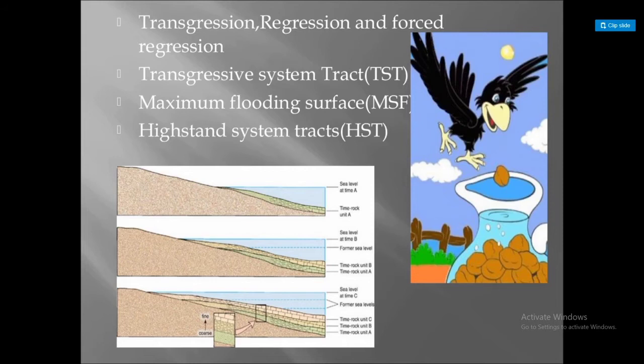Number one is the Transgressive Systems Tract (TST). TST is the transgressive systems tract, number two is the Maximum Flooding Surface (MFS), and there is also the Highstand Systems Tract (HST). All of these major terms are defined in the accompanying pictures and images.